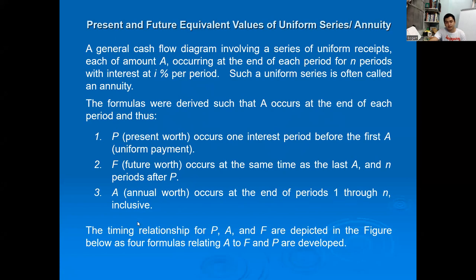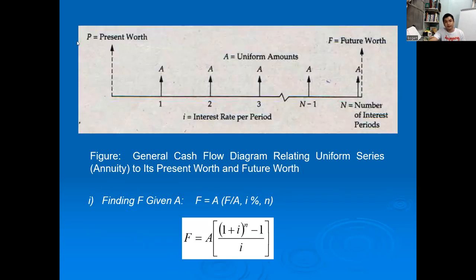From A we can derive the present worth one interest period, future worth after P, and annual worth at the end of periods one through N inclusive. We need to remember these three things in the formula. When we talk about annual worth, it's what you deposit yearly if you want to save for retirement or your future worth. Present worth is what you'll pay that will have interest over time.